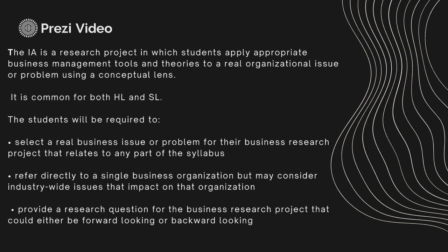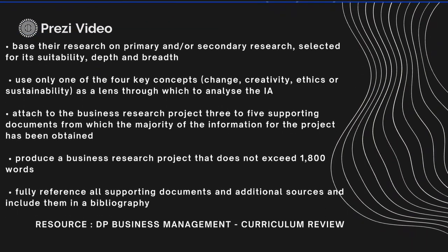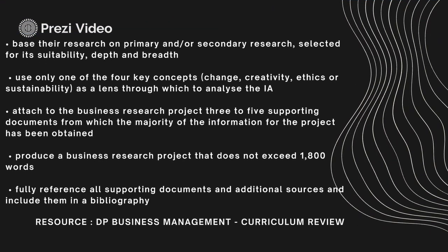Students will be required to select a real business issue or problem for their Business Research Project that relates to any part of the syllabus, refers directly to a single business organization (but may consider other industry-wide issues that impact on that organization), and provides a research question that could be either forward-looking or backward-looking. Research must be based on primary and/or secondary sources selected for their suitability, depth, and breadth. Students must use only one of the four key concepts — change, creativity, ethics, or sustainability — as a lens through which to analyze the IA.